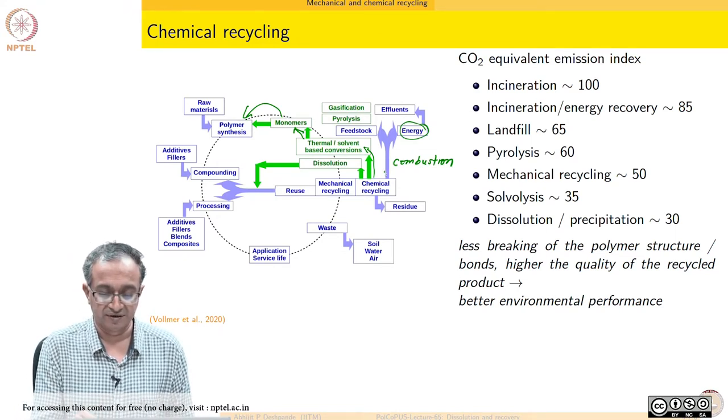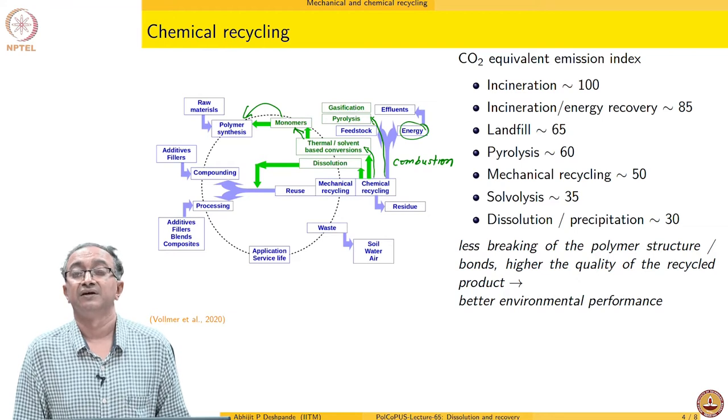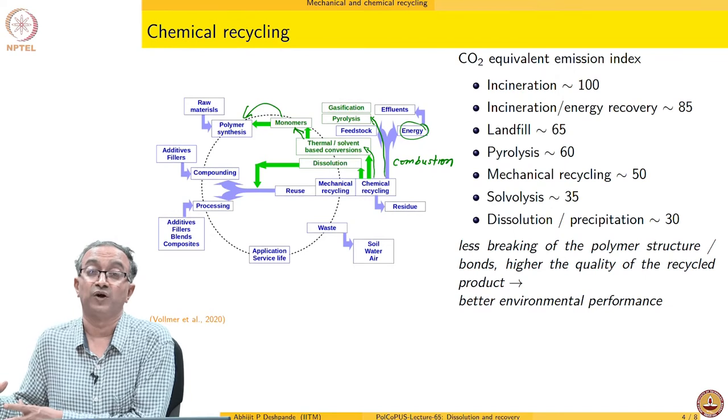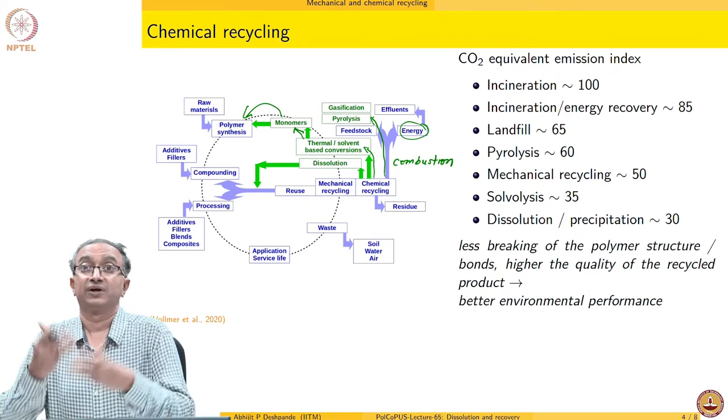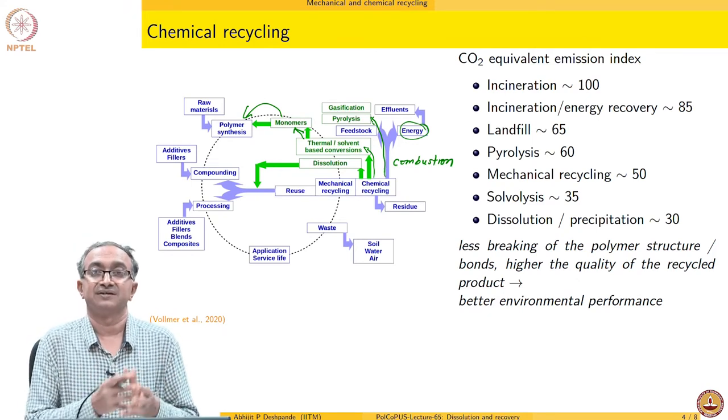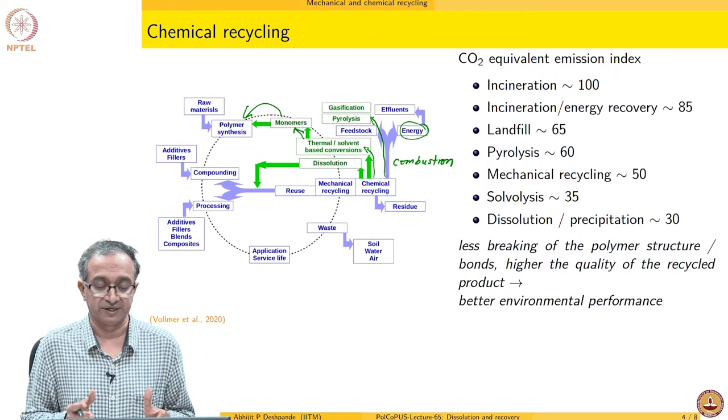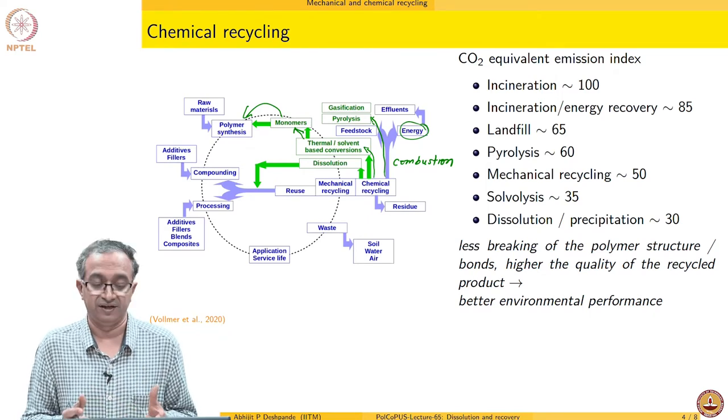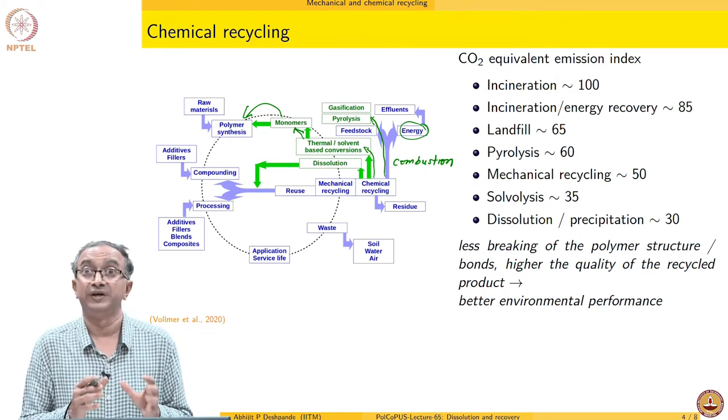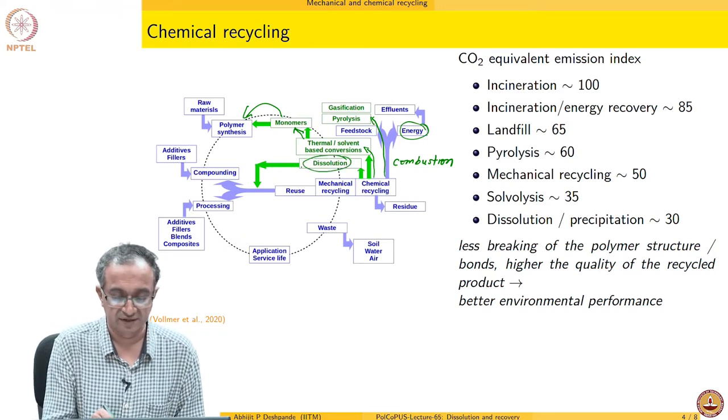Alternately, we can also have these. Rather than doing combustion, we can do pyrolysis or gasification reactions. Rather than converting the macromolecules all the way to CO2 and water which are the usual combustion products, we can try breaking it down where we get maybe pyrolysis fuel-like product or we could get gases which are again useful and which can be again used as fuel. These are different ways in which you could chemically recycle.